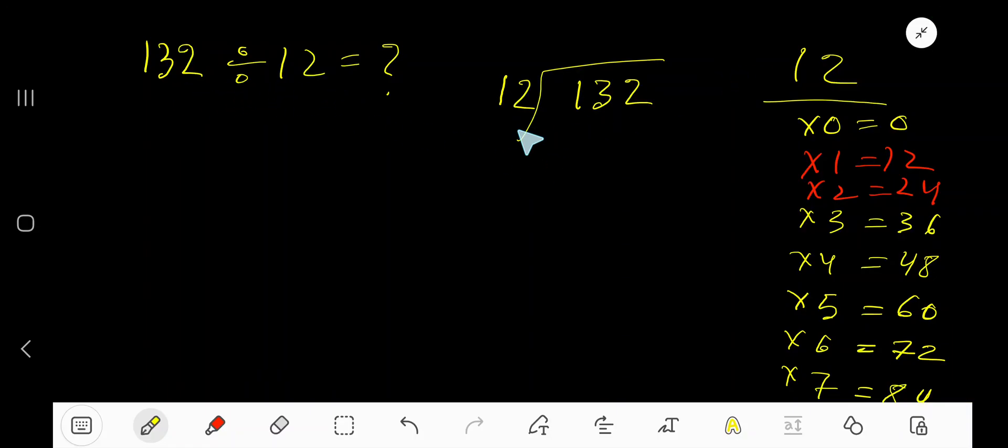132 divided by 12. 12 is a divisor, so we need the multiplication table of 12. 12 times 0 is 0, 12 times 1 is 12, 12 times 2 is 24, 12 times 3 is 36, 12 times 4 is 48, 12 times 5 is 60.